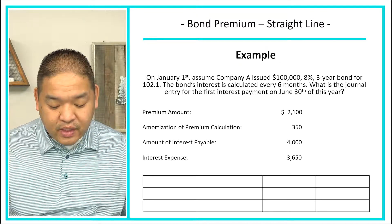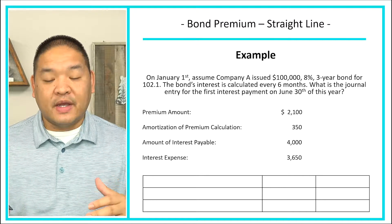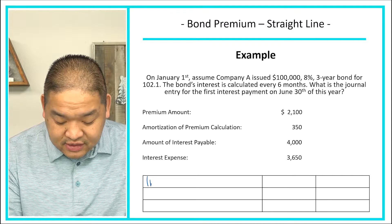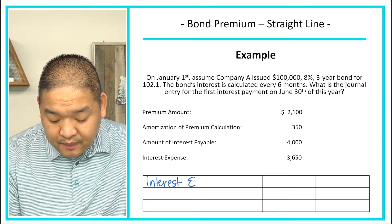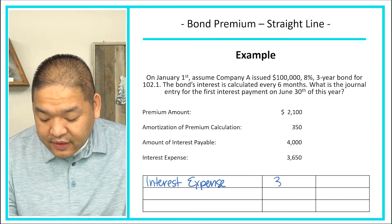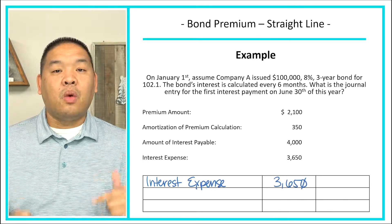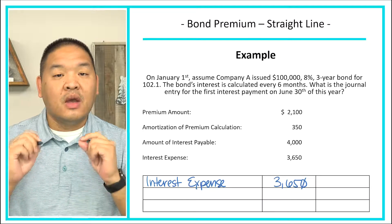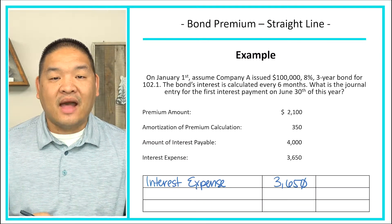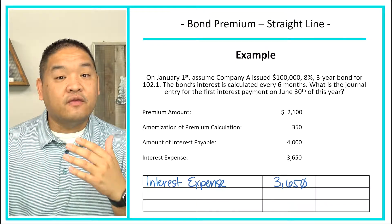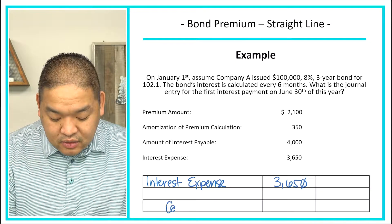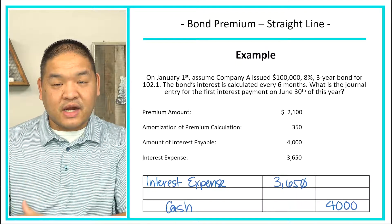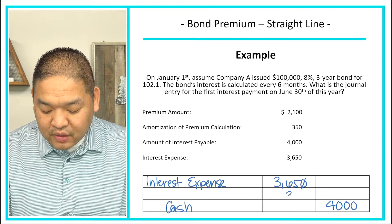Now we're ready to do the journal entry. We have an interest expense of $3,650. Since an expense increases with a debit, we debit interest expense $3,650. We also know we are paying cash to our bondholders at the stated rate based on the face value — $4,000 — so we credit cash $4,000. We now have a difference in our debits and credits; we are missing $350.